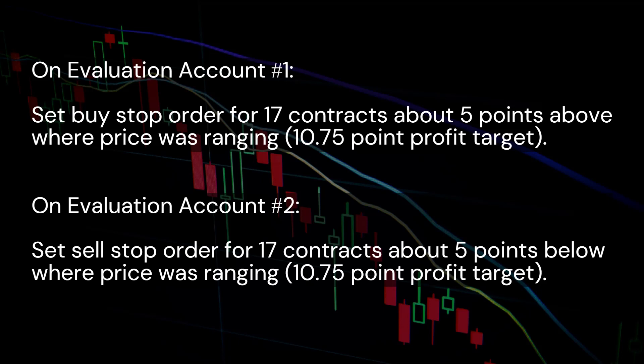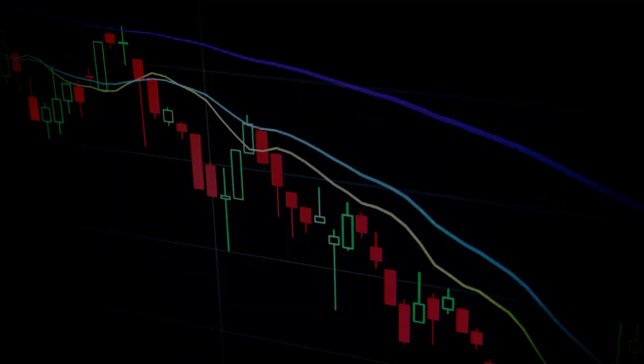This way, if price pumped upwards, my buy stop on the first account would trigger and I would scalp out for 10.75 points on the move up. If price dumped downwards, my sell stop on the second account would trigger and I would scalp out for 10.75 points on the move down.